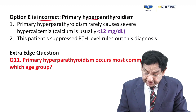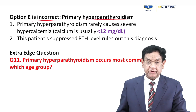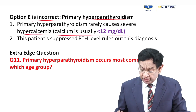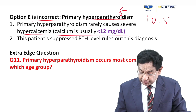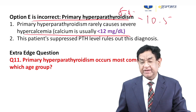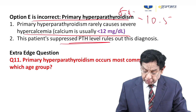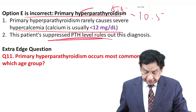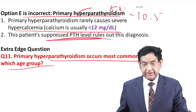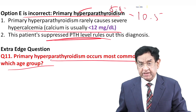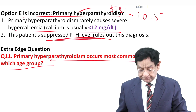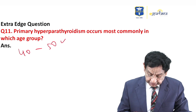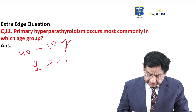Primary hyperparathyroidism is ruled out here because, first, in primary hyperparathyroidism calcium is usually below 12 mg% — never very severe. Second, PTH levels are suppressed in our patient, which rules out primary hyperparathyroidism. Primary hyperparathyroidism occurs most commonly in the 40–50 year age group and is more common in females than males.